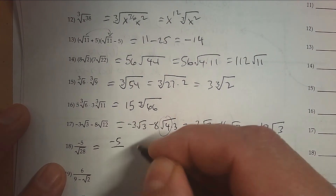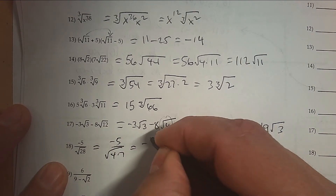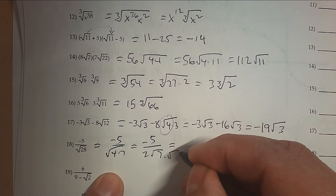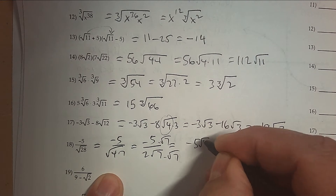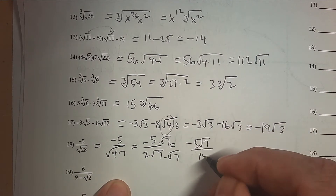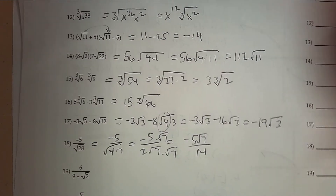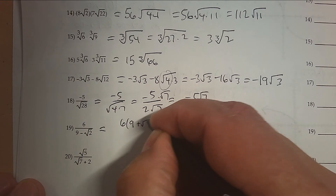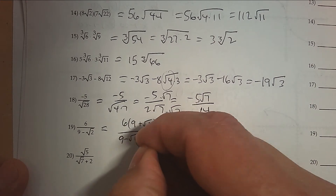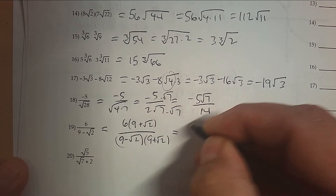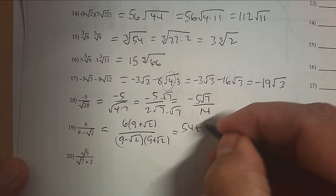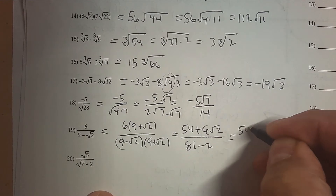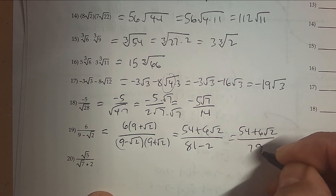The square root of 28 is really 4 times 7. The square root of 4 is 2, and what's left over is √7. So I'm going to multiply top and bottom by √7, and I get −5√7 over 14.